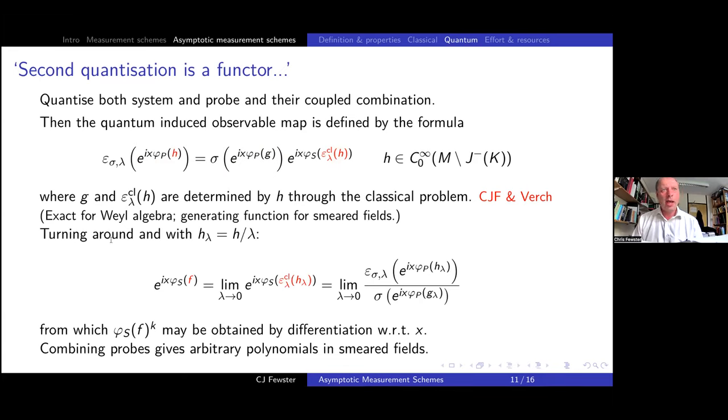So this is a formula that was known from my paper with Reiner Versch a few years ago now. If you use the vial algebra where you actually have exponentiated fields, this is exact. If you like the algebra of smeared fields, you can just think of this as an equation for generating functions. Either will be workable. For what we're doing now, we're going to rearrange it a little bit. Remember, we want to know how to get a specific exponentiated system field. Well, we know how to get F as a classical limit. So we can write this as the limit of these expressions and we just rearrange and we have to take the sigma factor down onto the other side. So this gives us the exponentiated fields. If you're working with smeared fields, then you differentiate with respect to our parameter X. And by again combining probes, we can get arbitrary polynomials in the smeared field.